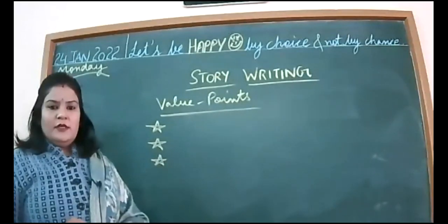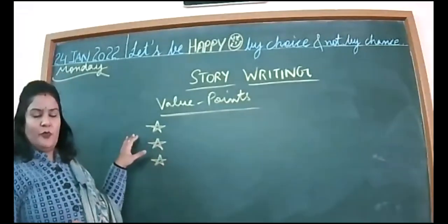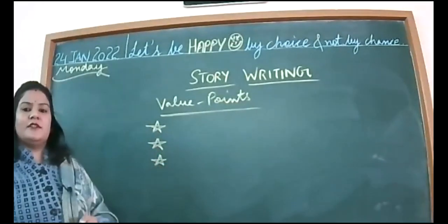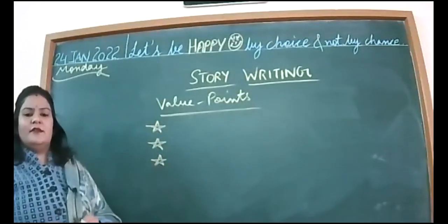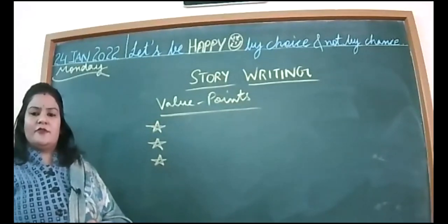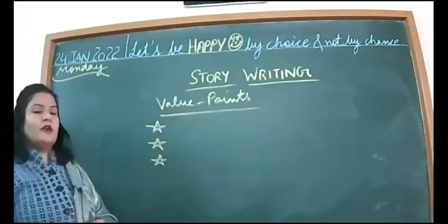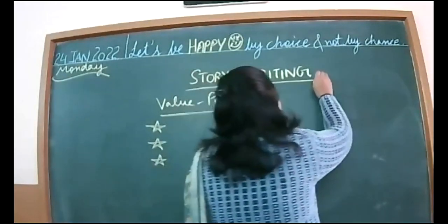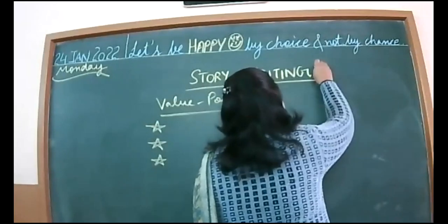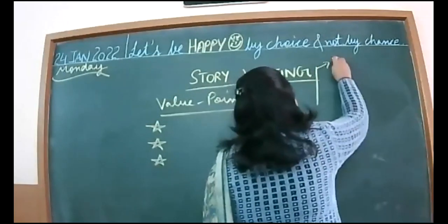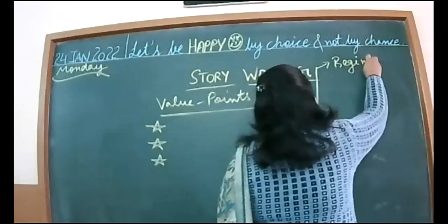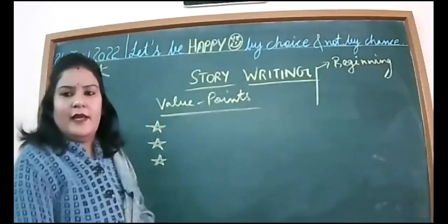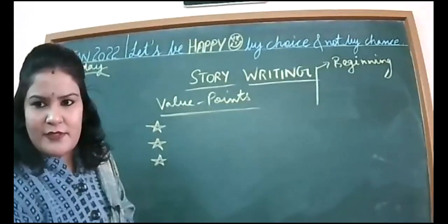The very first value point of story writing is you need to think of a title. Before discussing value points, let me tell you what sort of story writing can be there. There are many types. The first category is when the beginning is given to you — a beginning line is written and you have to draft a story further.